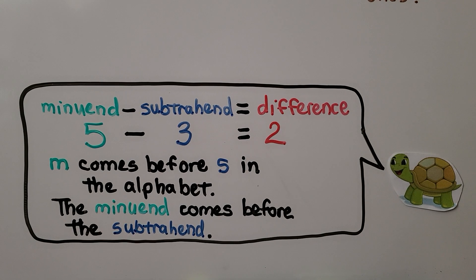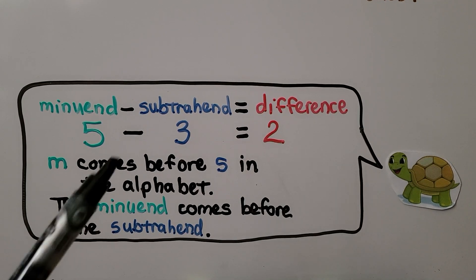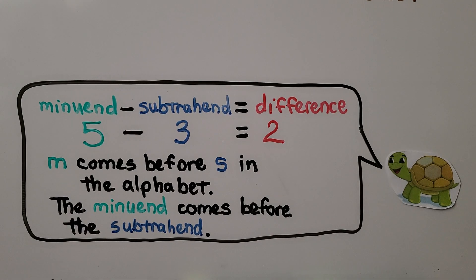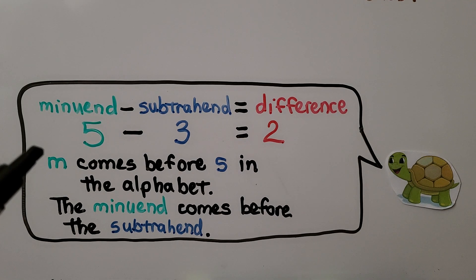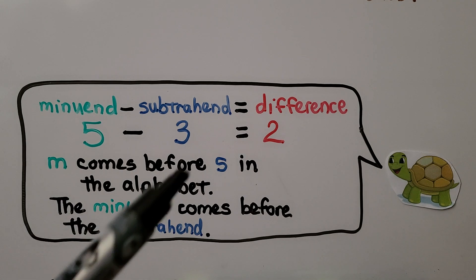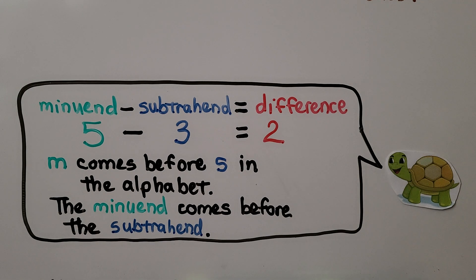Remember when we're modeling it with a drawing, we're drawing the minuend and taking away — crossing off — the numbers that are in the subtrahend. We can remember minuend is first and subtrahend is second because M comes before S in the alphabet. The minuend comes before the subtrahend.